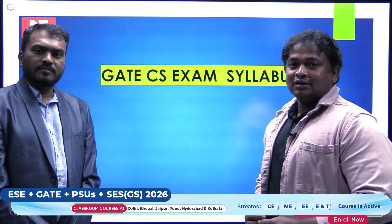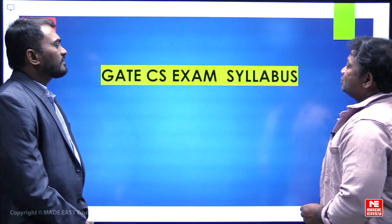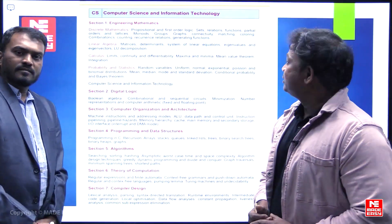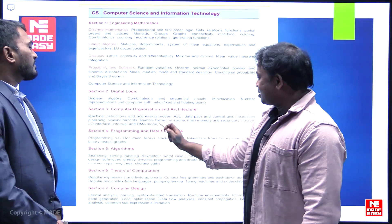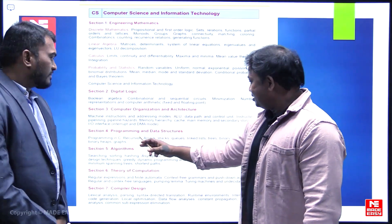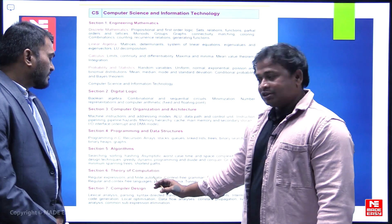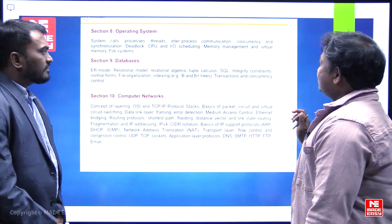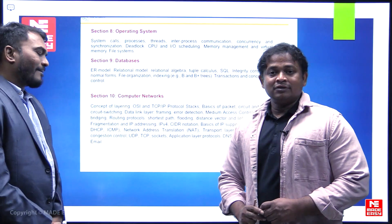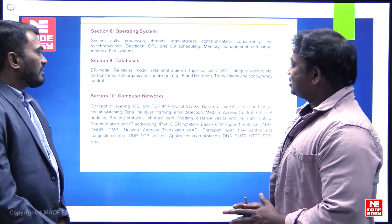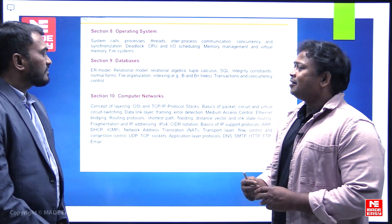Coming to the GATE Computer Science exam syllabus — there are a total of 10 subjects: Engineering Mathematics, Digital Logic, Computer Organization and Architecture, Programming and Data Structures, Algorithms, Theory of Computation, Compiler Design, Operating Systems, Databases, and Computer Networks. These are the major subjects in the GATE CS exam.